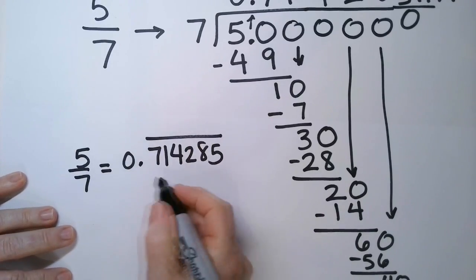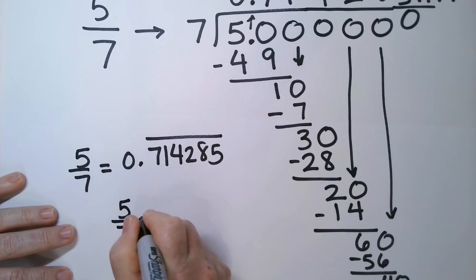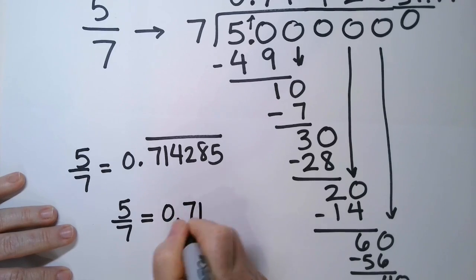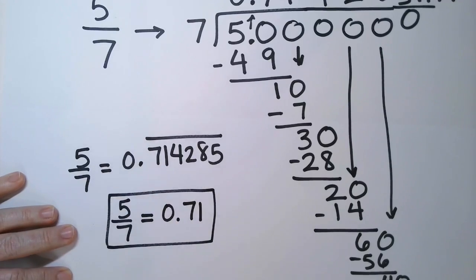But for most people, you don't need that many decimal points. So I would say 5 sevenths is approximated to 0.71. And that works just fine.